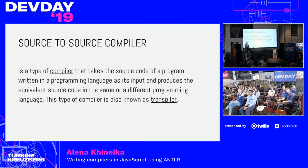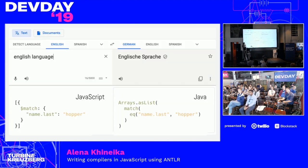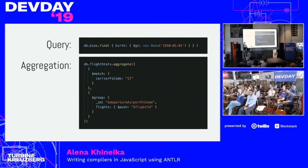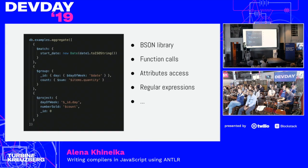To do so, we needed to write a language compiler — also known as a transpiler, or source-to-source compiler. It takes source code written in one programming language and produces equivalent source code in another language. It's very similar to translating human languages, but instead of English to German, we translate JavaScript to Java. Compass input always takes the form of either a document for the query bar or an array for the aggregation pipeline. This reduced the scope of the problem, because we didn't have to recognize the whole syntax of the input language — only particular parts of it. However, the subset we needed to support was large and complex enough that we decided to treat the problem as if we had full language support.